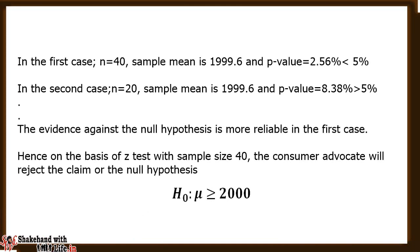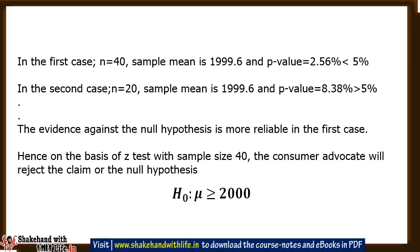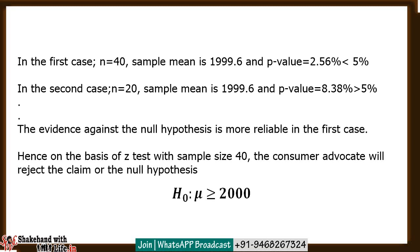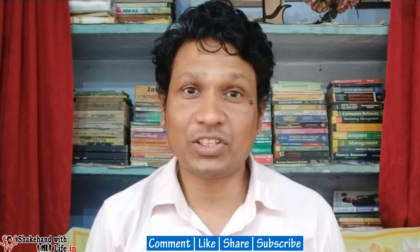In the first case we could reject the null hypothesis, but in the second case we could not. Although in both cases the sample mean was the same, the reason is that in the first case the sample size n equals 40 was larger than n equals 20 in the second case. Therefore, the evidence against the null hypothesis was more reliable and produced a smaller p-value. Hence, based on the Z test with sample size 40, the consumer advocate will reject the claim that the average amount of cola filled by the machine is at least 2000 cc.